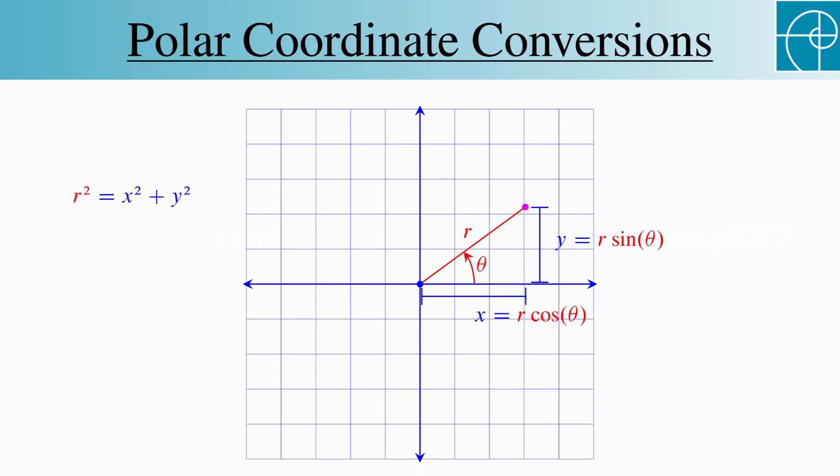First, notice that the Pythagorean theorem tells us that r squared equals x squared plus y squared. So r equals plus or minus the square root of x squared plus y squared. Also notice that tangent of theta equals y over x. Both of these are troublesome though, especially the tangent formula, since it's not even defined when x equals zero.